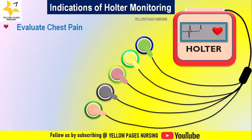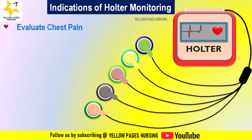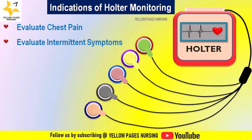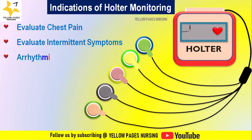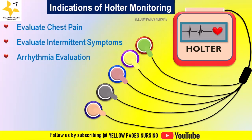Holter monitoring can provide considerably more diagnostic information than a standard resting ECG. First is evaluating chest pain — it helps assess chest pain not clearly linked to physical activity or known causes. Next, it evaluates intermittent symptoms; the Holter monitor is used to investigate irregular symptoms like palpitations, dizziness, or fainting that come and go.